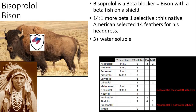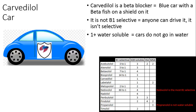Next we have bisoprolol. 'Biso' kind of sounds like bison to me, so here we have a bison with a beta blocker on him. We know that Native Americans used to hunt the bison, so this is a Native American with a headdress. I'm going to pretend there are 14 feathers on there, for the 14-to-one ratio making it more beta-1 selective. It's also three-plus water soluble.